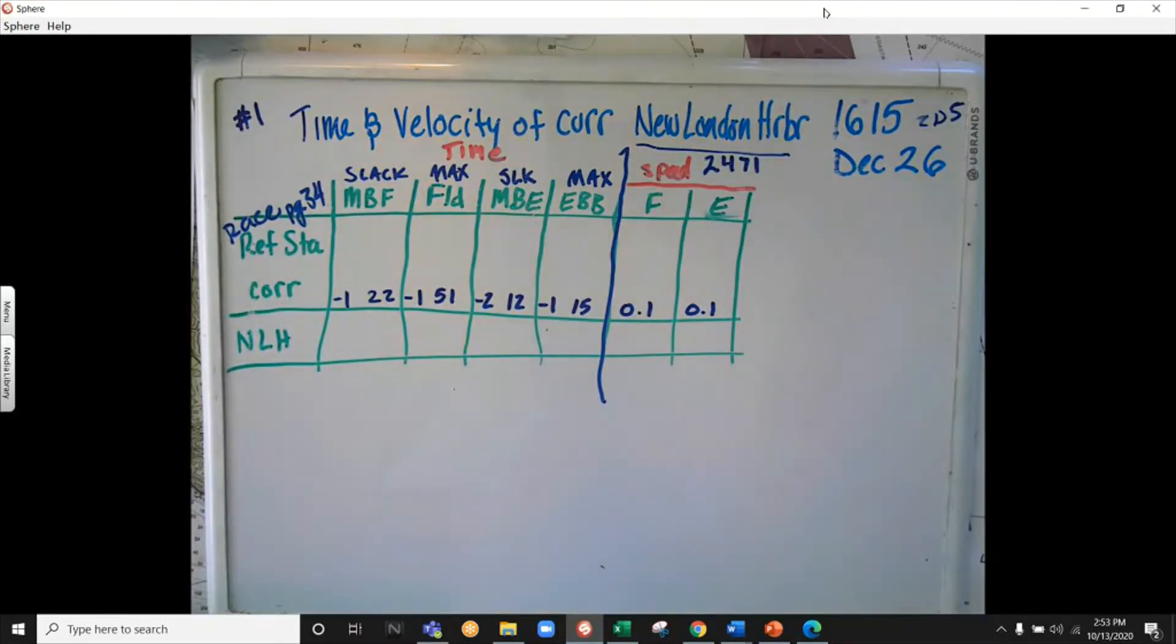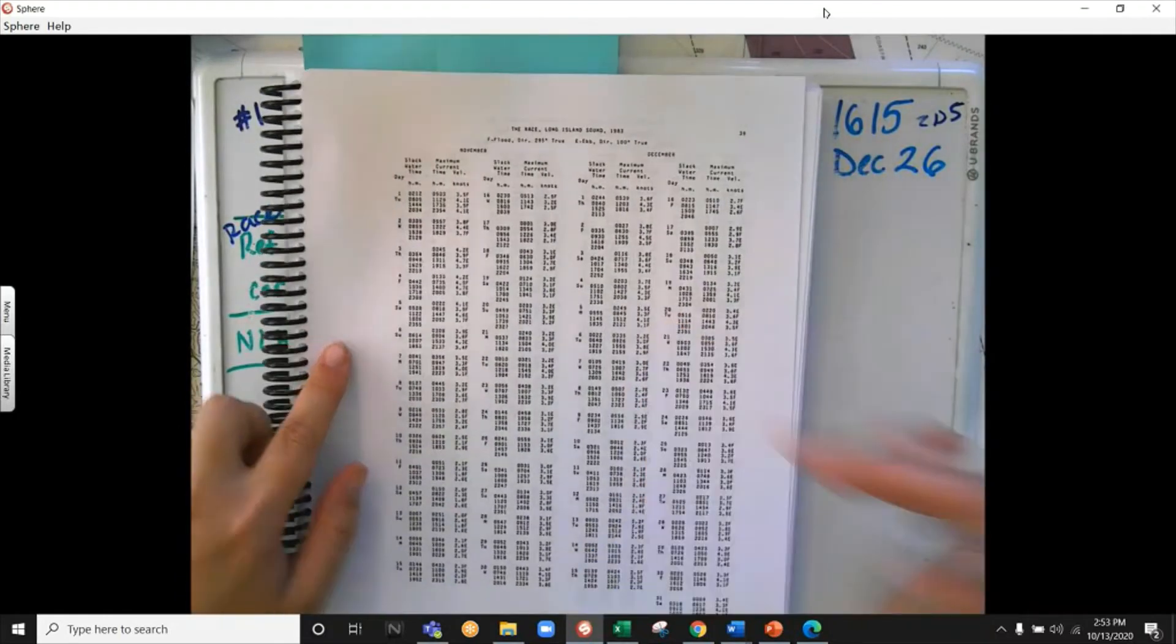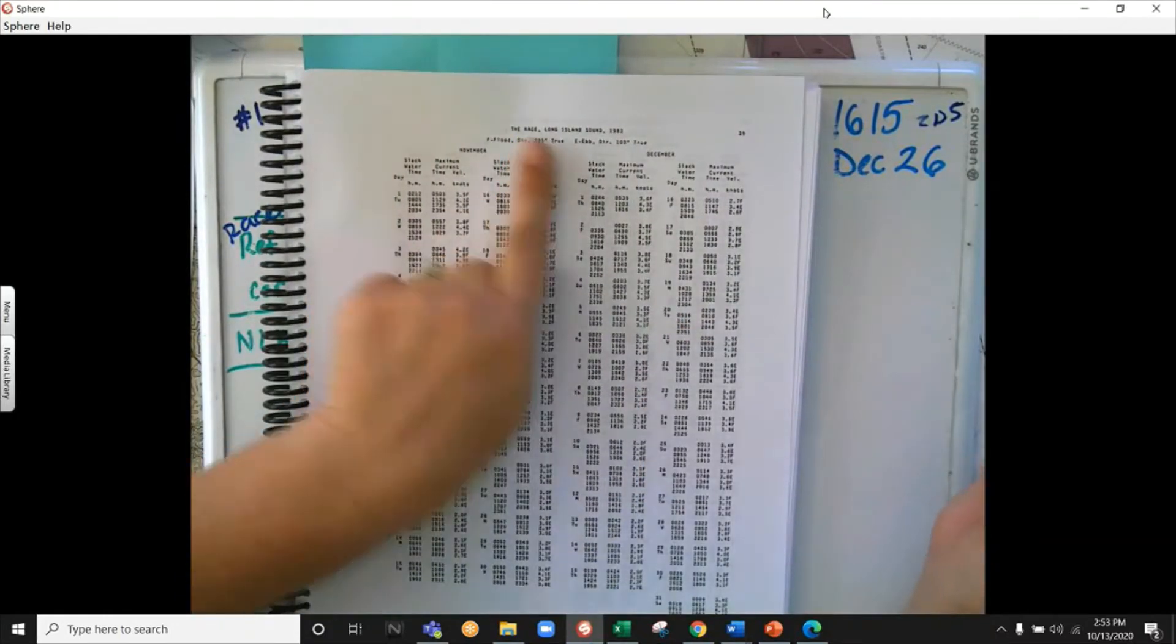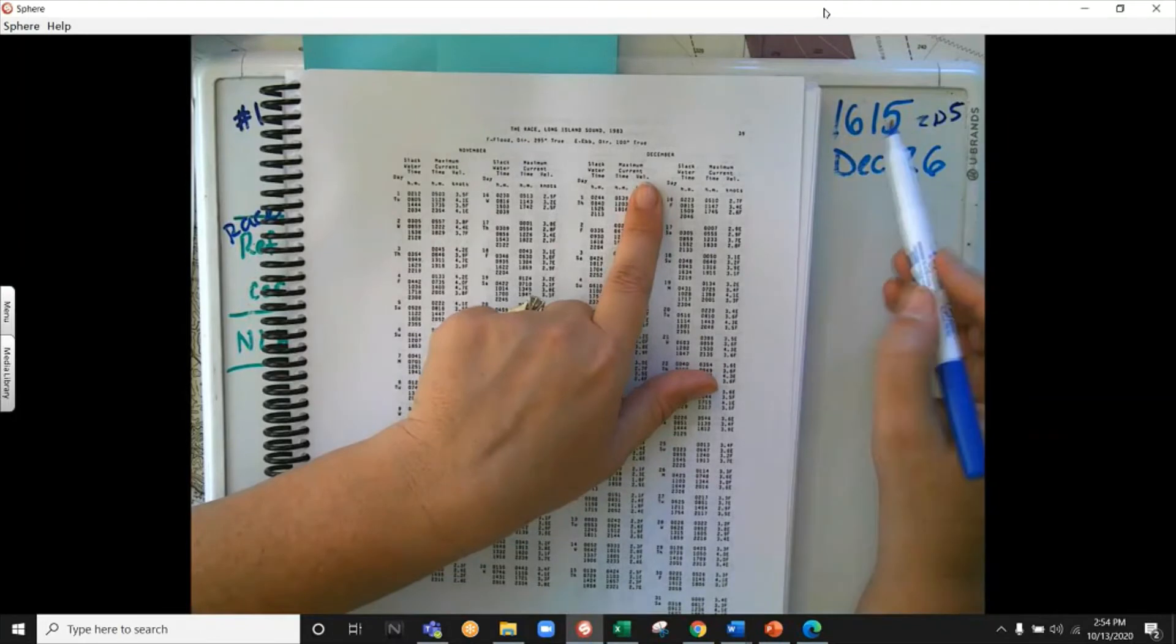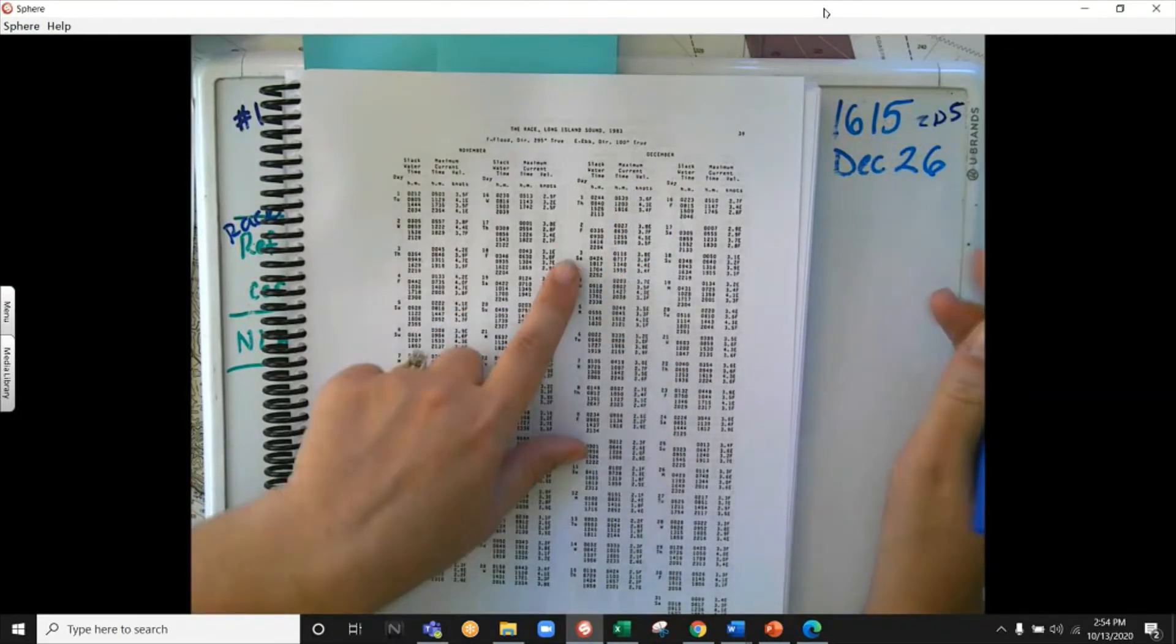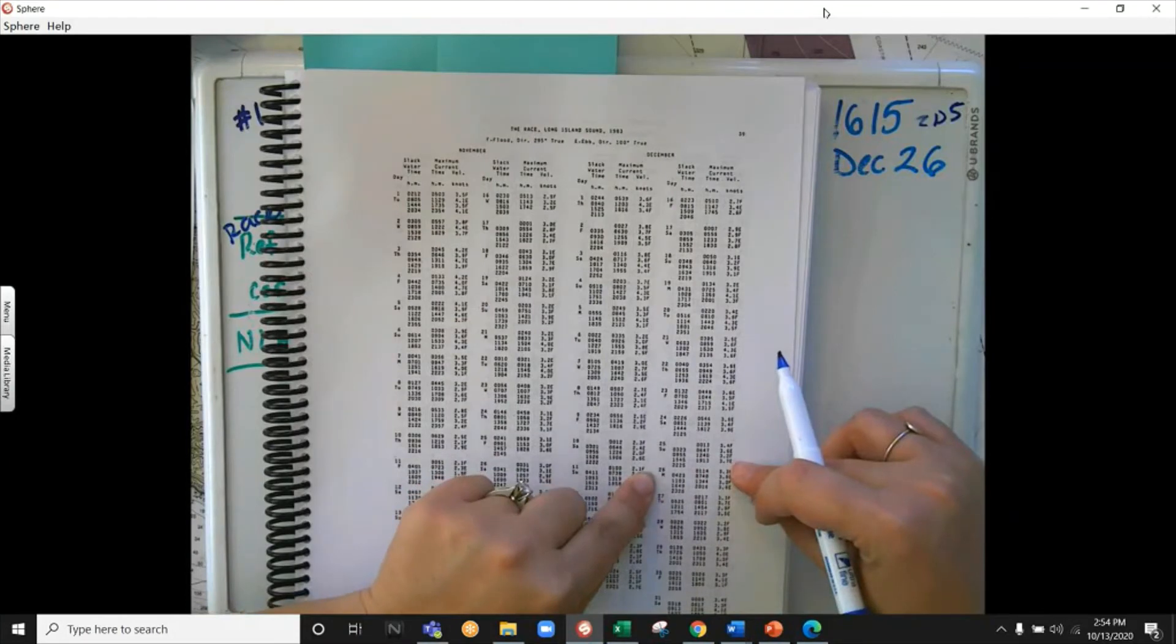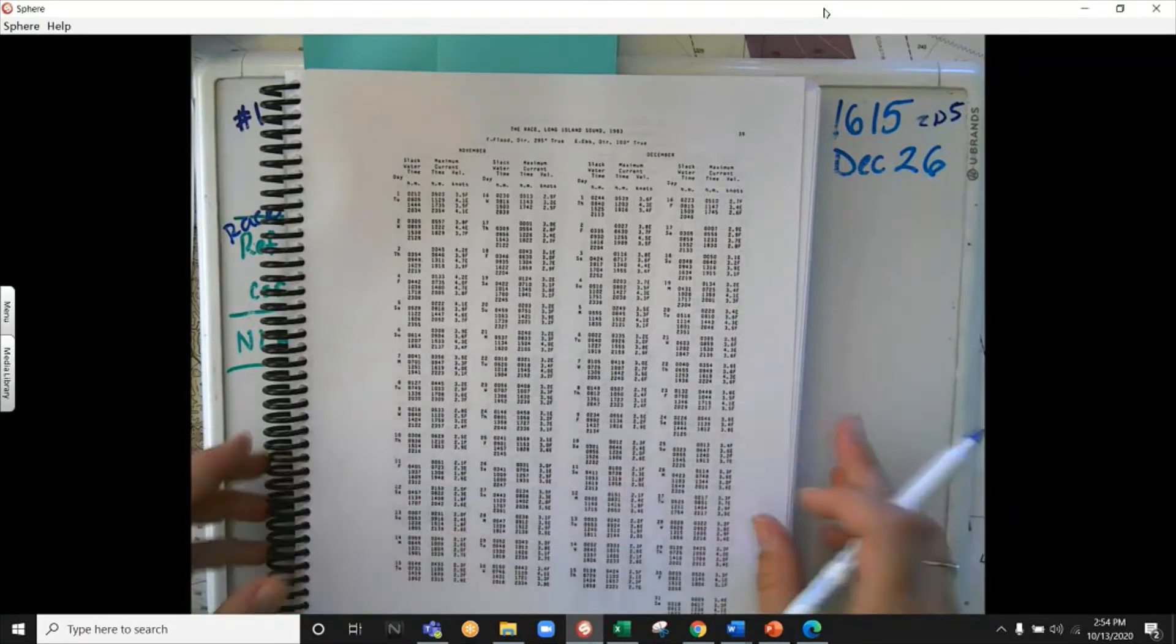Okay, so I flipped over to December on the race. Here we have the race in December because we're looking for 1615 on December 26. So we go to December 26 and we want to write in, so I'm just going to copy these numbers down real quick so we can see those boldly.